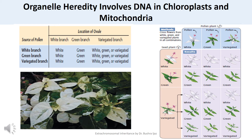Correns investigated how inheritance of this phenotypic trait occurred. Inheritance in all possible combinations of crosses is strictly determined by the phenotype of the ovule source. For example, if seeds representing the progeny were derived from ovules of branches with green leaves, all progeny plants bore only green leaves regardless of the phenotype of the source pollen. Correns concluded that inheritance was transmitted through the cytoplasm of the maternal parent, because the pollen — which contributes little or no cytoplasm to the zygote — had no apparent influence on the progeny phenotype.